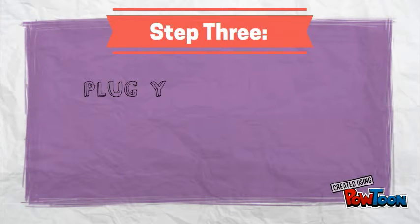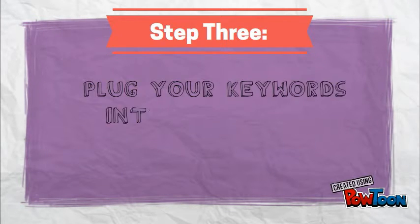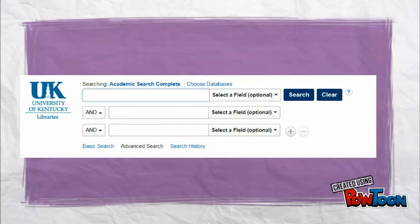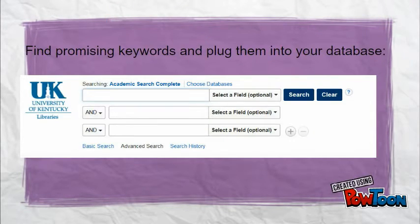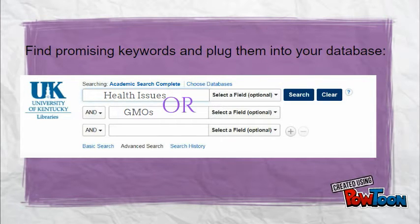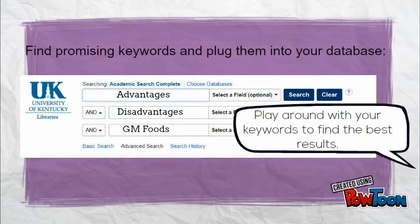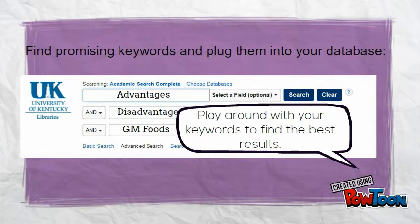Now I'm going to use some of those keywords I came up with to search in the library database. Searching with two to three keywords usually works best. Try mixing and matching your keywords so that you find the best results.